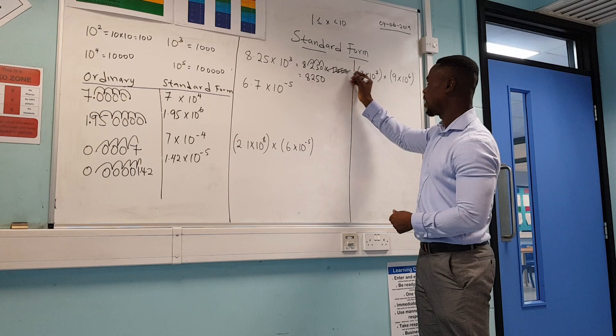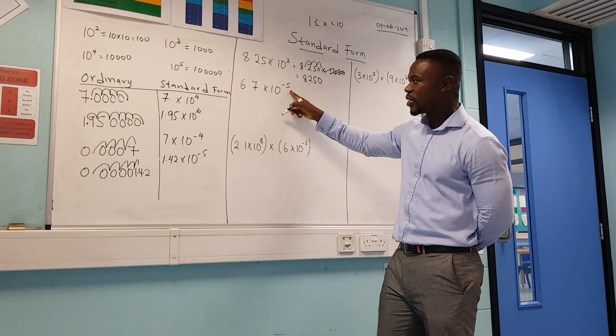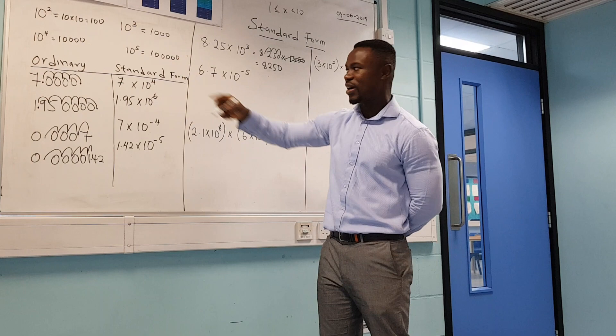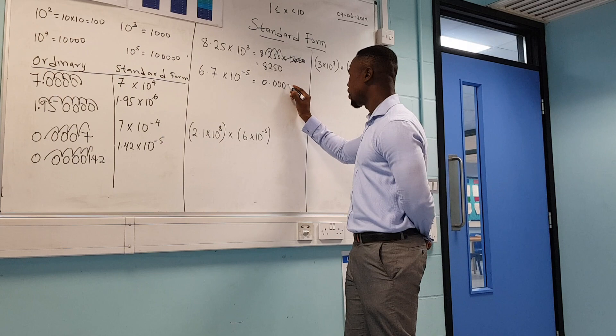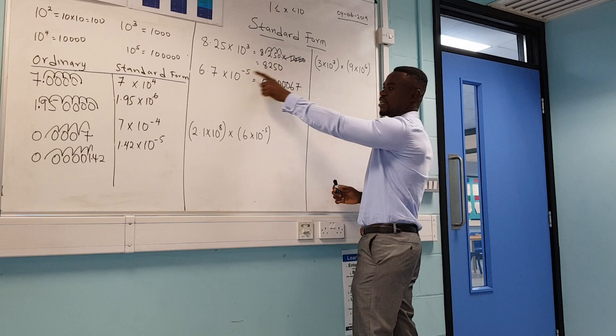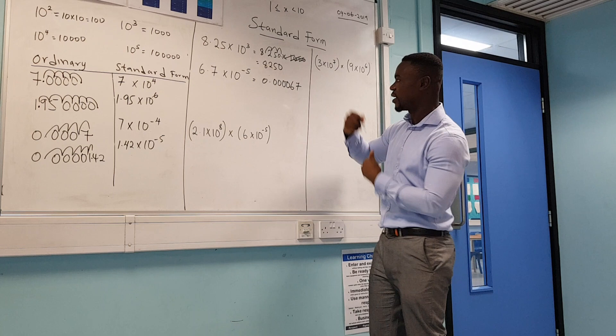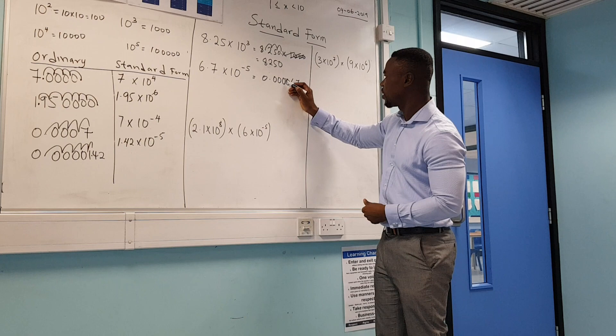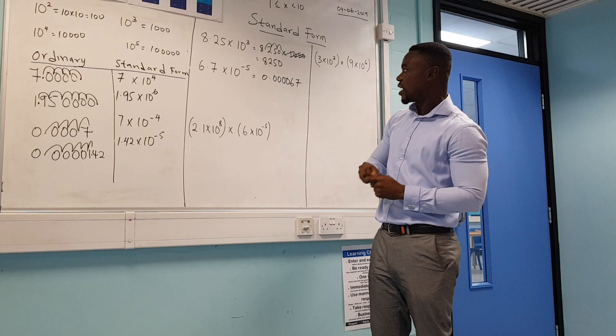For a negative power example: minus 5 tells me there will be four zeros after the decimal point before the significant figures, because including the 6 it will be five positions. So writing this out: 0.000067, which in decimal form is 0.0000142... Let me clarify — counting from the 6: one, two, three, four, five gives us the minus 5. You can check by moving the decimal point back: one, two, three, four, five — that confirms it.